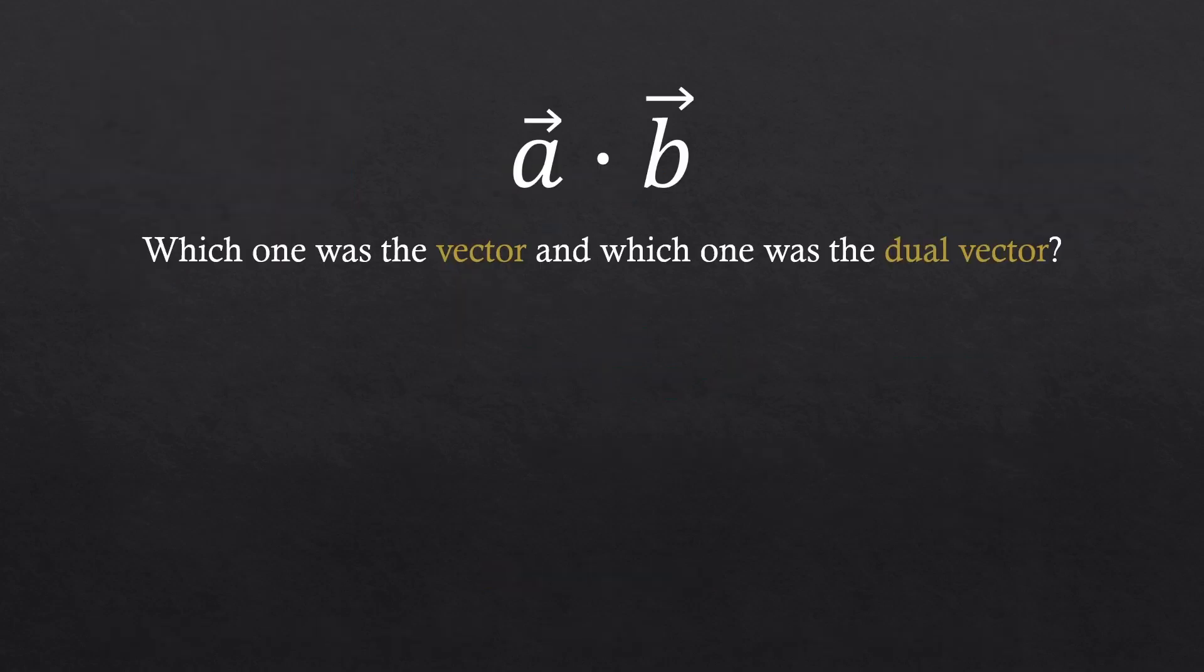Now, before going any further, you might be asking this. If multiplying a vector and a dual vector was an inner product, which ones were vectors and which ones were dual vectors back in our high school? Well, if this was an inner product, would that have mattered? Because A dot B and B dot A are the same anyway.